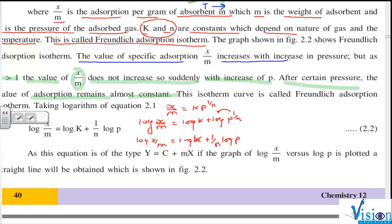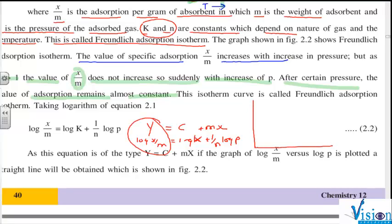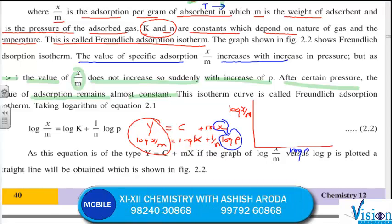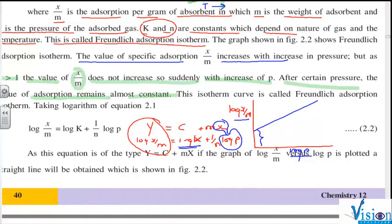If we compare this equation to y equals c plus mx, then on vertical axis, that is y, we get variable log of x by m. On horizontal axis, that's x, we get log p. It will be a straight line where log k will be your intercept and 1 by n will be your slope.